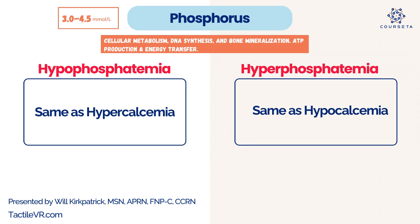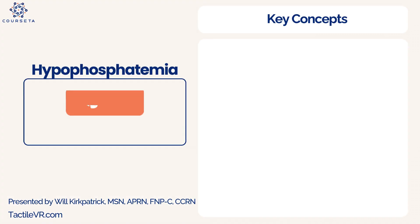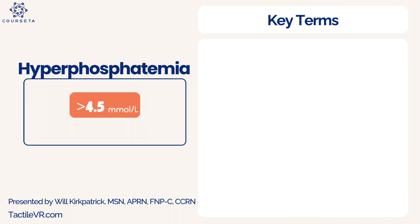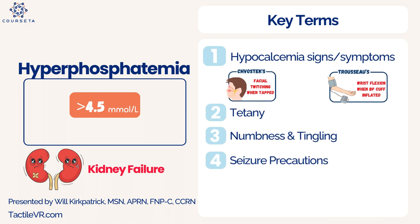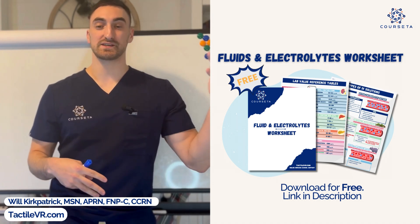Lastly, phosphorus is essentially the opposite of calcium. Hypophosphatemia and hyperphosphatemia are directly reversed from hypocalcemia and hypercalcemia because both are controlled by parathyroid hormone — they share a direct inverse relationship. Hypophosphatemia presents like hypercalcemia: weak muscles, slow deep tendon reflexes, confusion, and cognitive changes. Hyperphosphatemia (over 4.5) presents like hypocalcemia — Chvostek's sign, Trousseau's sign, and hyperreflexia. Many kidney patients are on a low-phosphorus diet because of this. Seizure precautions also apply.